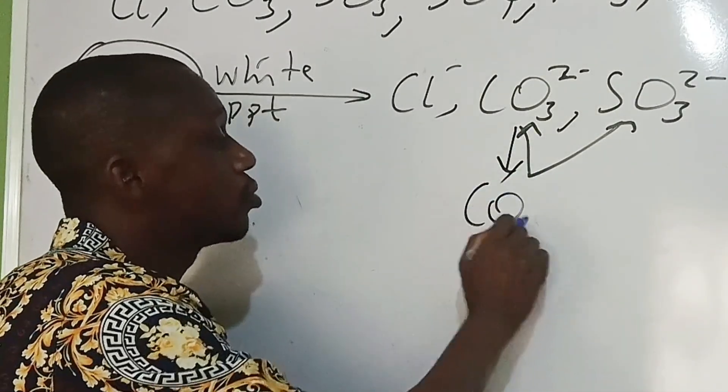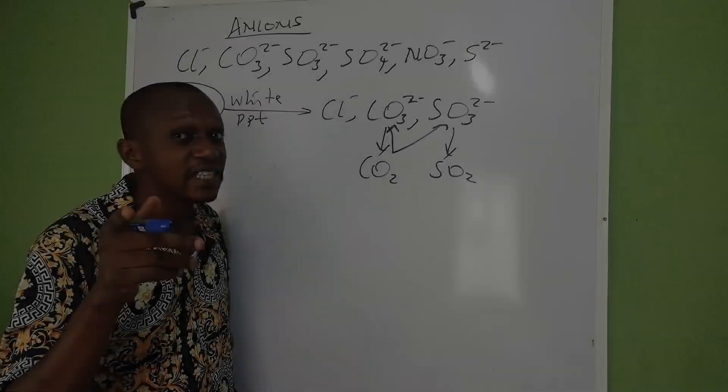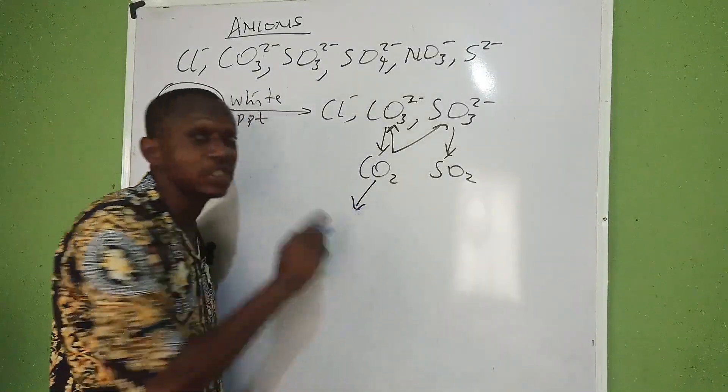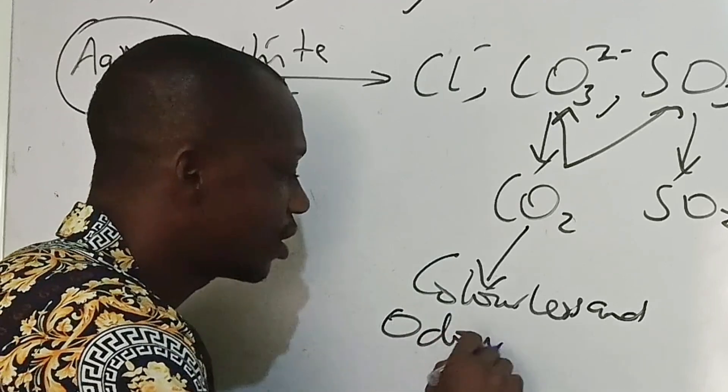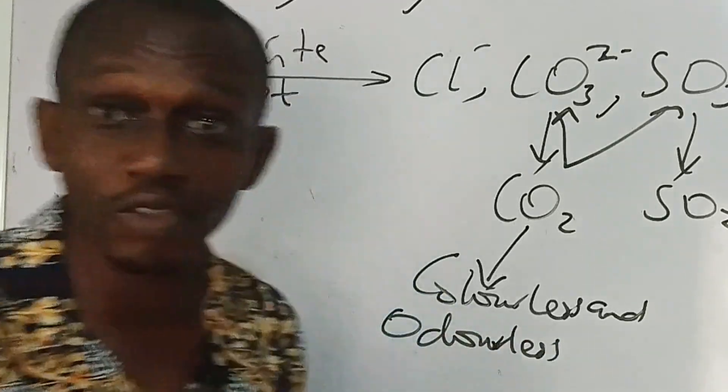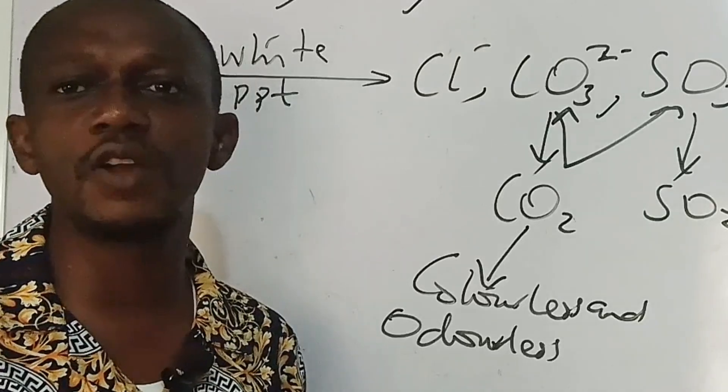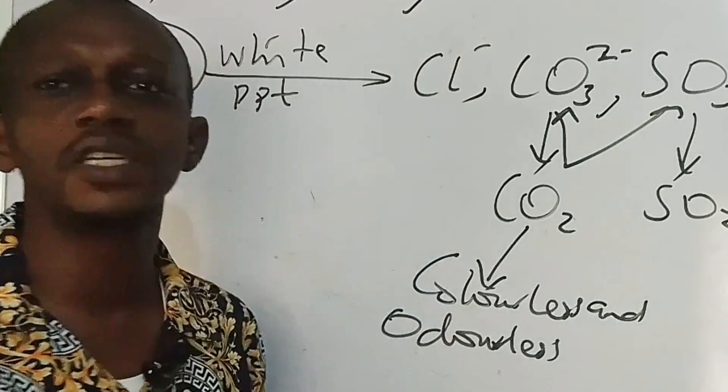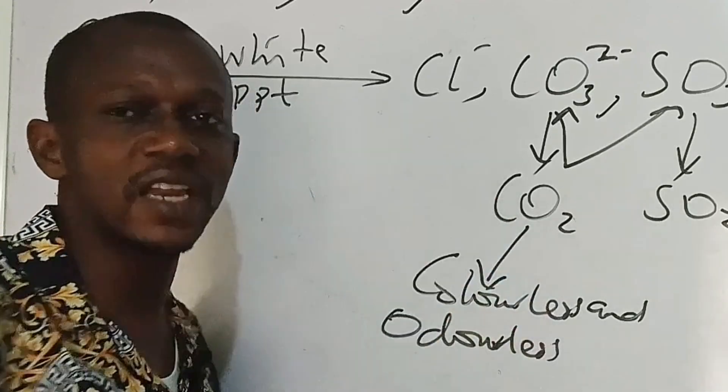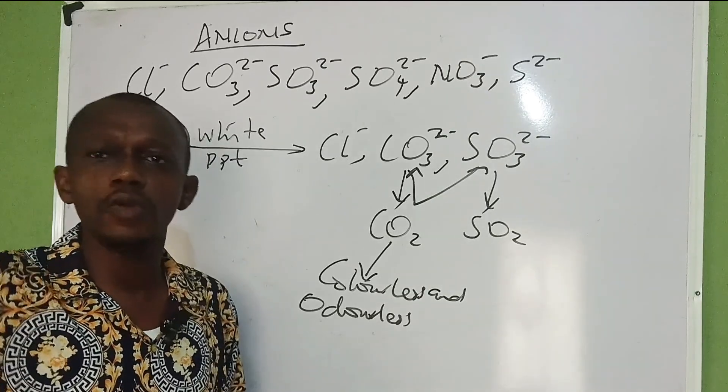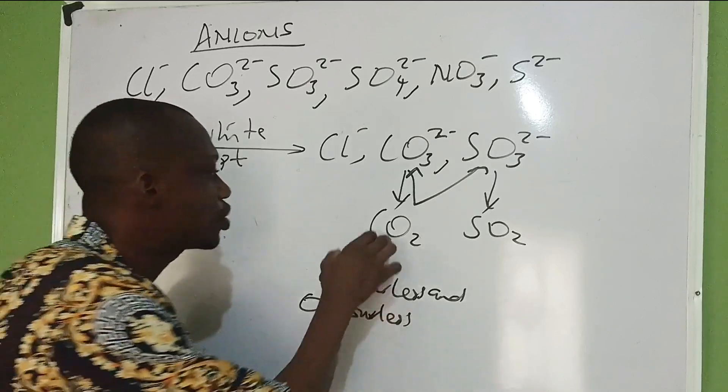What will come out of CO₃²⁻ will be CO₂, what will come out of SO₃²⁻ will be SO₂. The properties of CO₂ gas is that it is colorless and odorless. We waft it to our nose, carbon dioxide, we cannot see any color and can't perceive any odor. It's colorless and odorless. But how do we now know it's the one? You test with moist litmus paper.